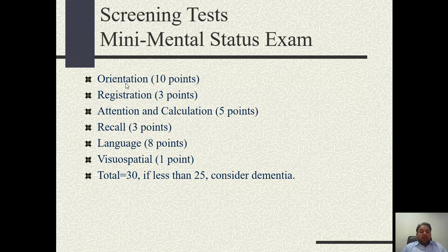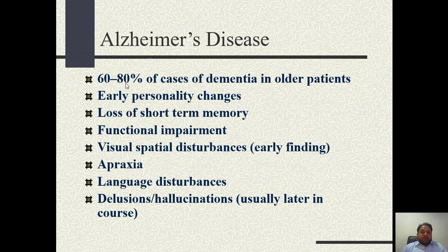Then recall is assessed. Language is assessed by naming — the patient may be shown a ball, pen, or watch and asked to name it. Visuospatial orientation is assessed by drawing. The total score is 30, and a patient scoring less than 25 is labeled as having dementia.